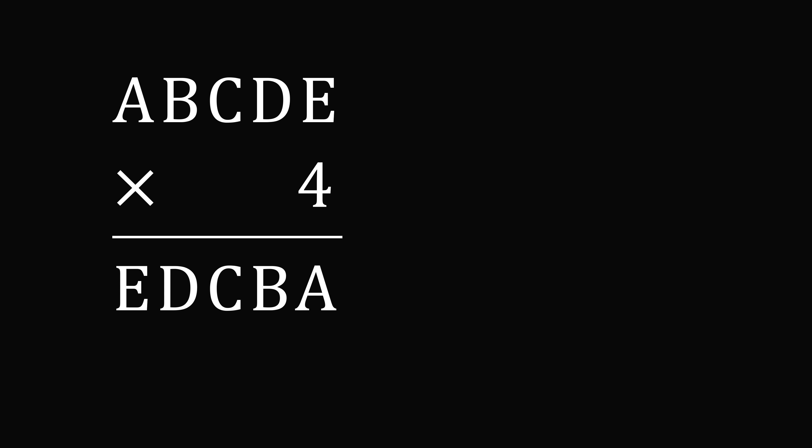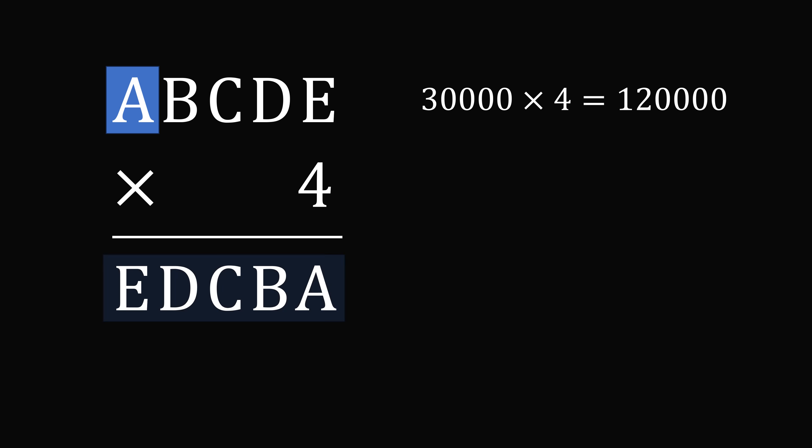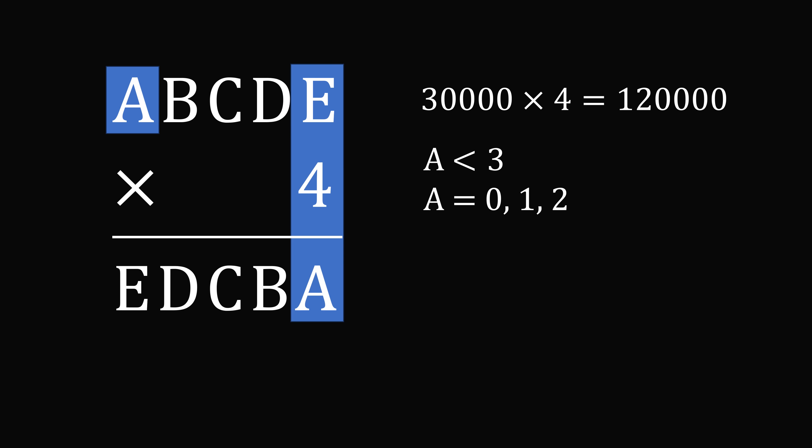We will get started by solving for the letter A. Notice that 30,000 times 4 is equal to 120,000. That's a 6-digit result, but we need the result to be a 5-digit result. So that means A has to be less than 3. So A can be equal to 0, 1, or 2. It is allowed for A to be equal to 0. You can have a leading 0. There's nothing in the rules that prohibit it. So we need to work through each case. Now notice E times 4 is equal to A. That means A is an even number. So A has to be equal to 0 or 2.